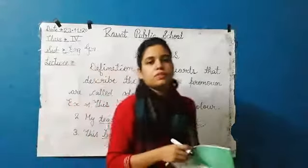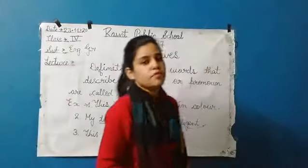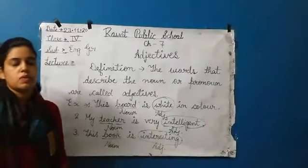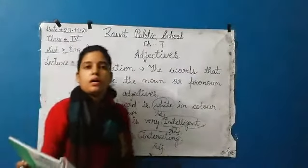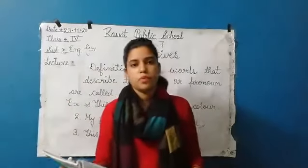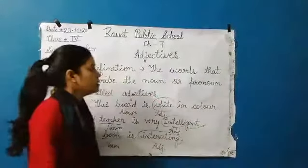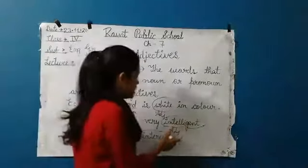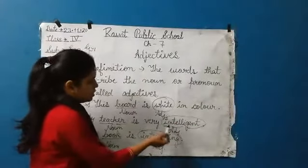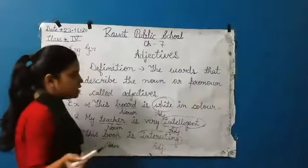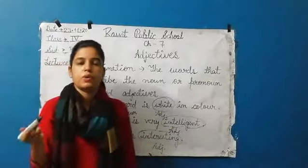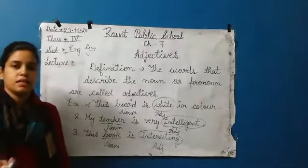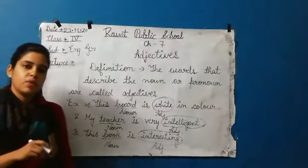Now, kinds of adjectives — how many types are there? There are five kinds of adjectives. First is adjective of quality — words like 'interesting' and 'intelligent' describe the quality of a noun. Second is adjective of quantity.